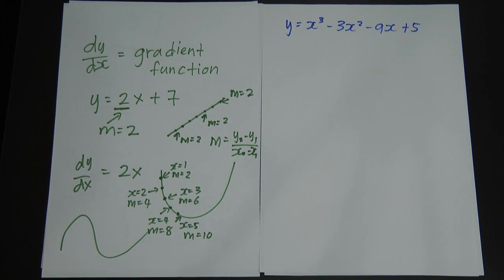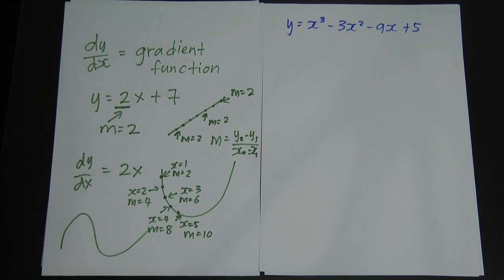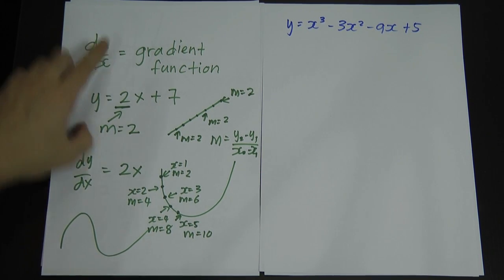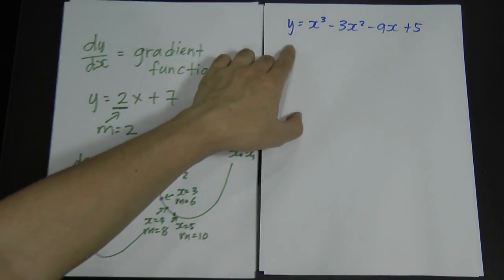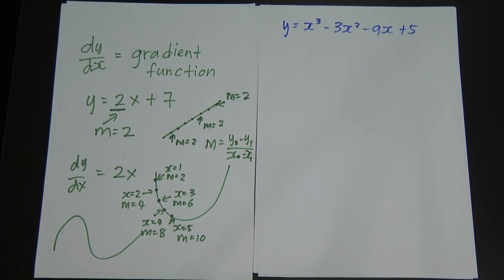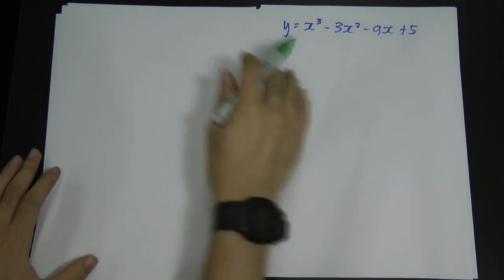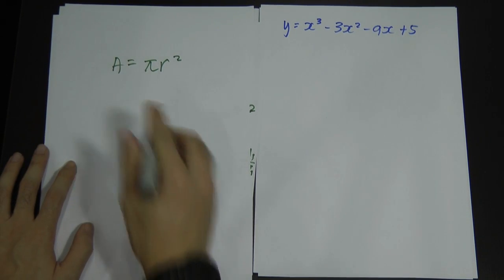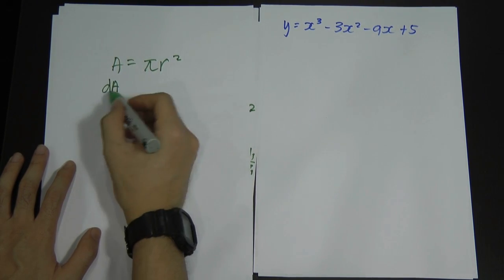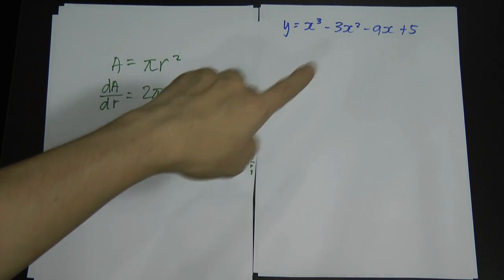The dy/dx notation is based on what variables are in your equation. It's not always dy/dx — you might see da/dt, or ds/dt. Differentiation depends on the variable. Since most curve equations relate y and x, we use dy/dx, meaning we differentiate y with respect to x. For example, if the area of a circle is A = πr², differentiating A with respect to r gives dA/dr = 2πr.